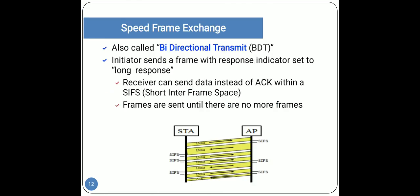For speed frame exchange, frames can be exchanged very quickly with a short inter-frame sequence — this is also called bi-directional transmit, meaning both the sender and receiver can transmit data. In the diagram, the station sends data and within the short inter-frame sequence receives an acknowledgement; the receiver can send data instead of just an acknowledgement within that short inter-frame sequence, and frames continue to be sent until there are no more frames.